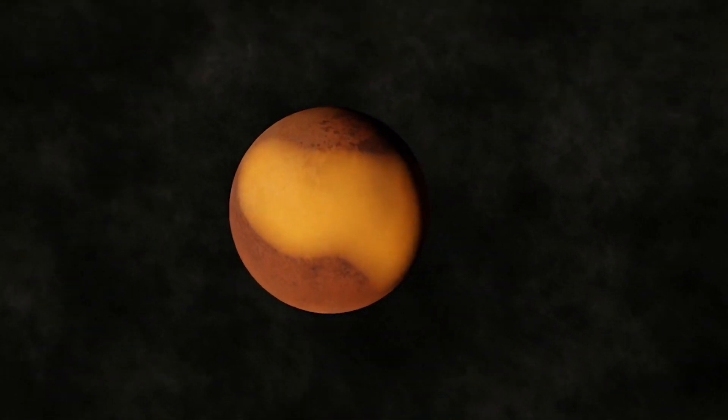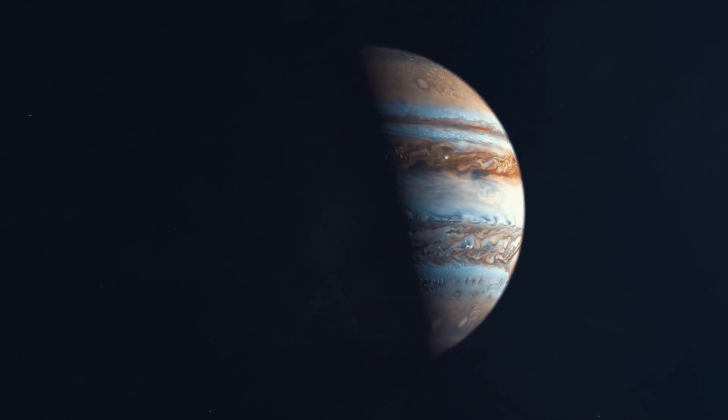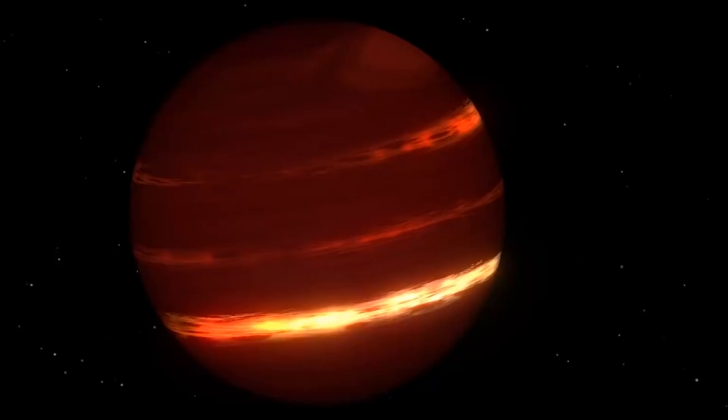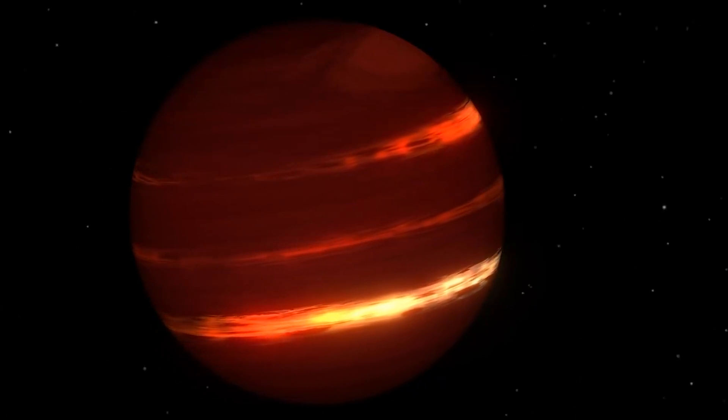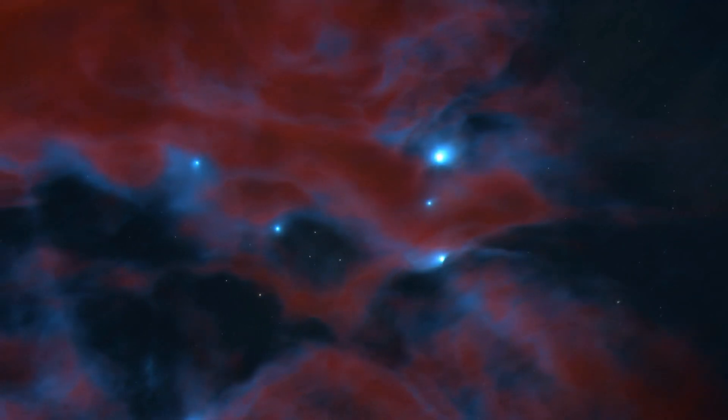Designated as VHS-1256b, this colossal exoplanet, estimated to be 12 times the size of Jupiter, astounds with its immense scale. Similar to stars and brown dwarfs, its significant mass provides insight into its formation from the collapse of a gas and dust cloud.